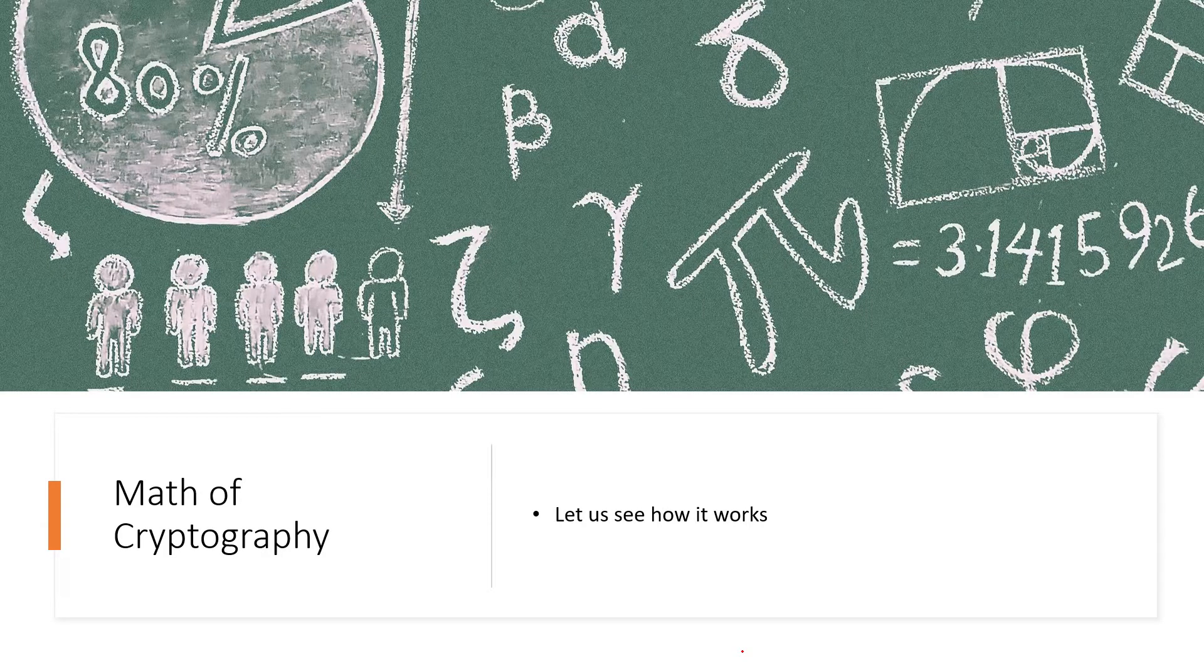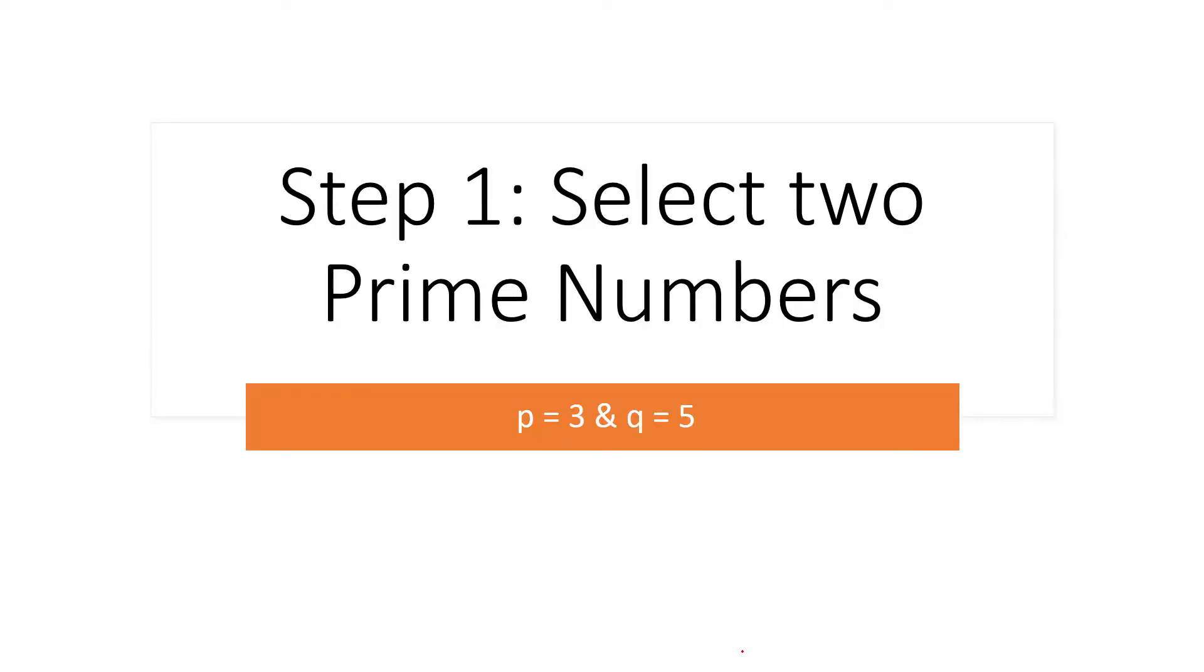So the first step we're gonna do is we're gonna select two prime numbers. To make the calculation easy, I'm gonna choose P is equal to 3 and Q is equal to 5. So I have two prime numbers: P is equal to 3 and Q is equal to 5.